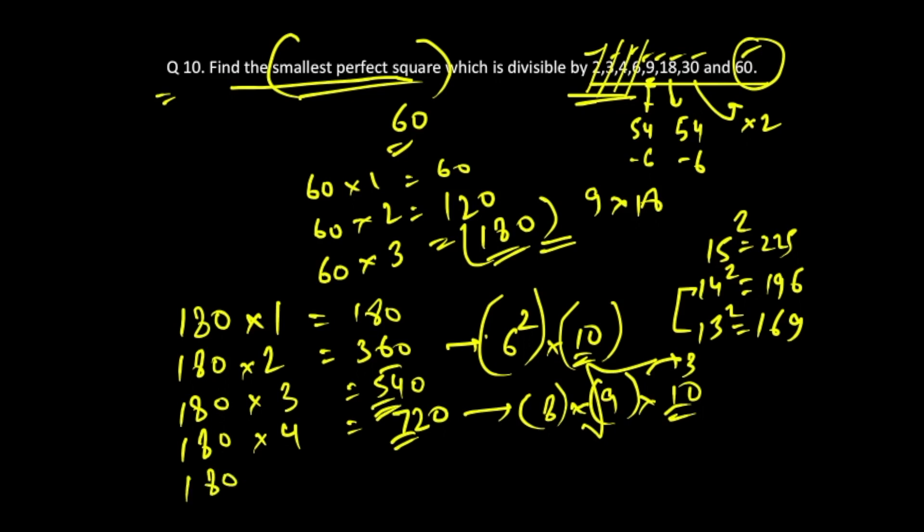Let's consider the next multiple. 180 times 5 is 900. Is 900 a perfect square? We'll write 900 as 90 into 10, then you can write it as 9 into 9 into 10 into 10. Hence it can be written as 3 square into 10 square, because 9 is 3 square. So you take the square root, you get 3 into 10.